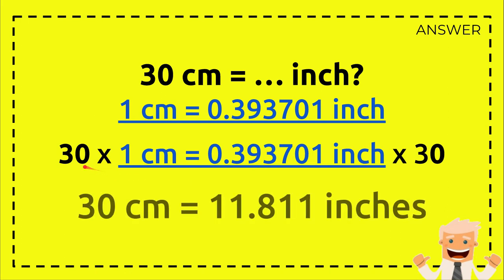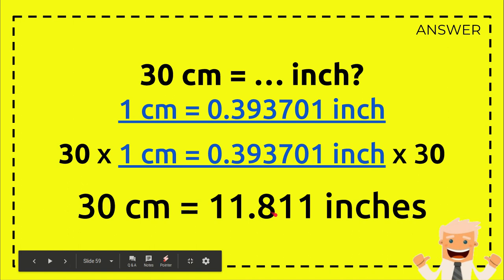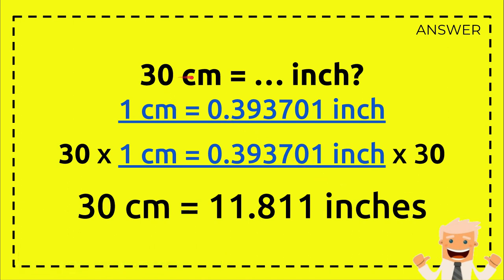30 times 1 equals 30, and 30 times 0.393701 inch equals 11.811 inches. So 30 centimeters equals this number.